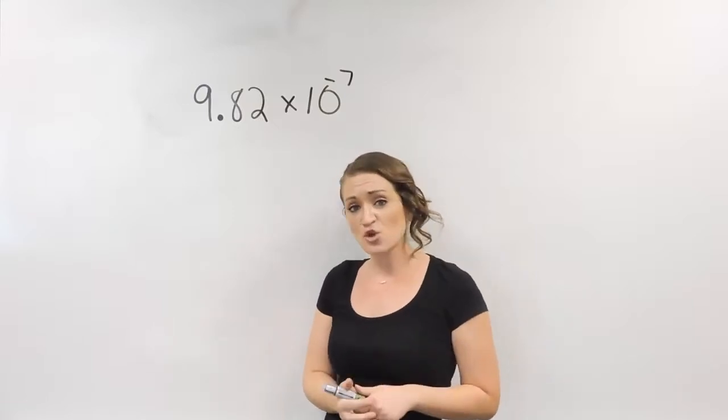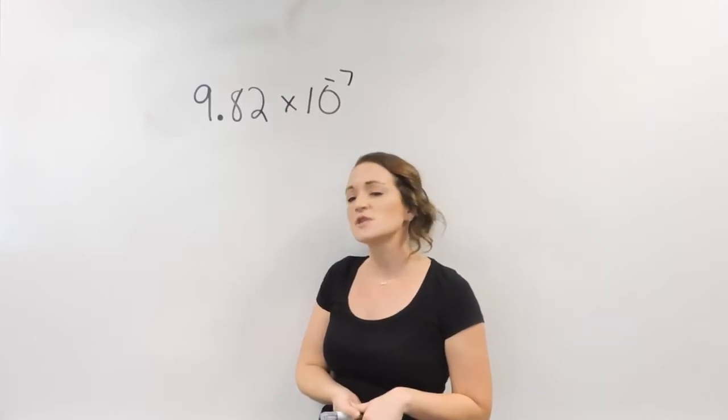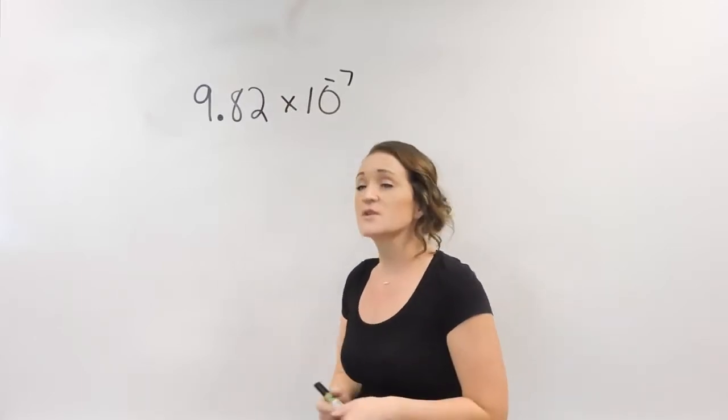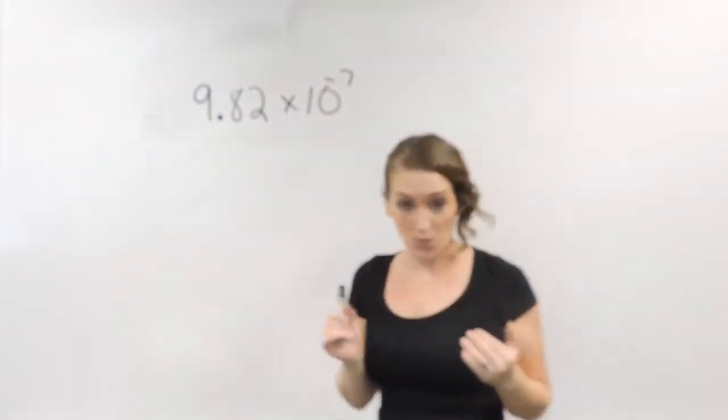So scientific notation is just a different way to write a number, and it's normally used when you're dealing with either a really big number or a really small number. So let's talk about how do you go from scientific notation and make it look like a regular number.